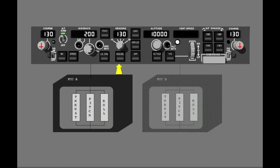Push the Heading Select switch and observe how the FCCs operate. The FCCs calculate roll commands for the Heading Select mode. The master FCC sends the commands to the Flight Directors and the Autopilot. Now push the Level Change switch. The FCCs calculate thrust and pitch commands for the Level Change mode and roll commands for the Heading Select mode.